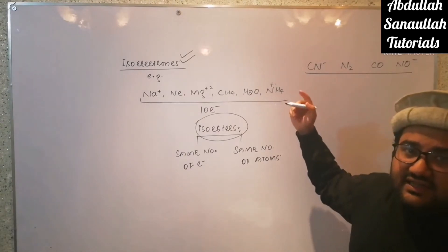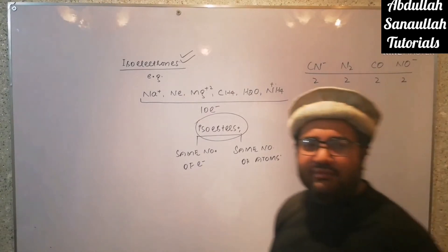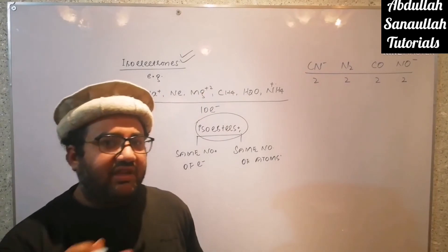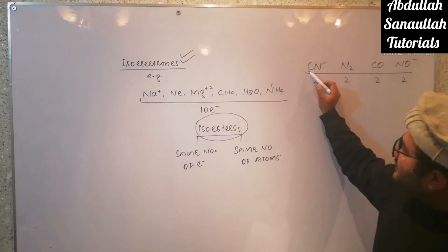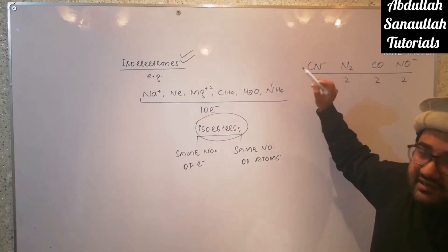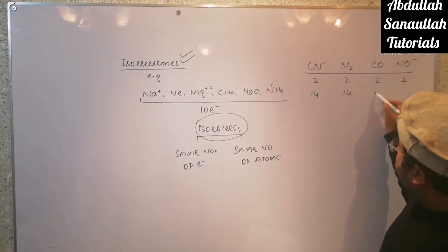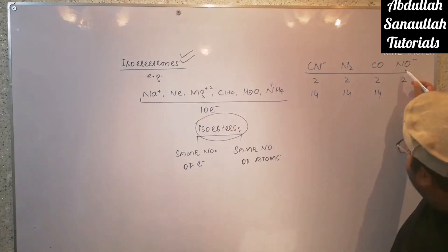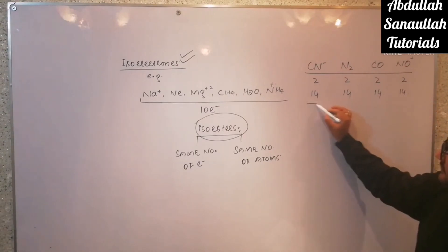First of all, let's calculate the number of atoms: 2, 2, 2, 2. The number of atoms in these four species is 2, meaning they have equal number of atoms. Now let us calculate the electrons in them. 6 electrons in carbon, 7 electrons in nitrogen makes 13, minus 1 means add another electron, it will make 14. 7 plus 7, 14. 6 plus 8, 14. 7 plus 8, that will become 7 and 8, 15. So here must be positive sign, it will become 14.